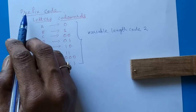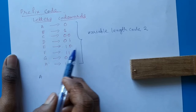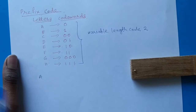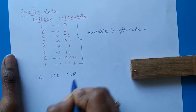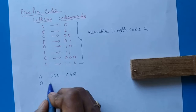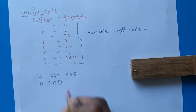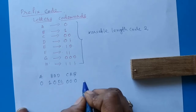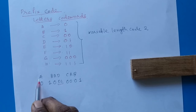Now consider another example of variable length code, where A→0, B→1, C→00, D→01, E→10, F→11, G→00, H→111. For the same message 'a bad cab', we transmit: A=0, B=1, A=0, D=01, C=00, A=0, B=1. This sequence is transmitted from the transmitter side.